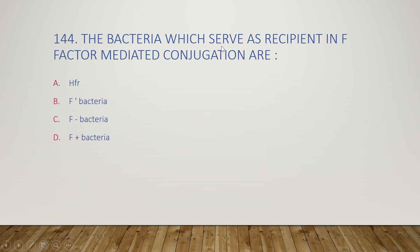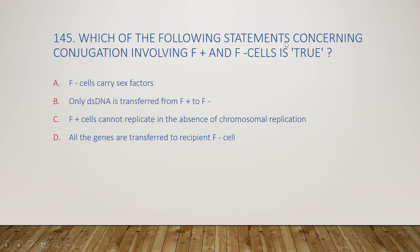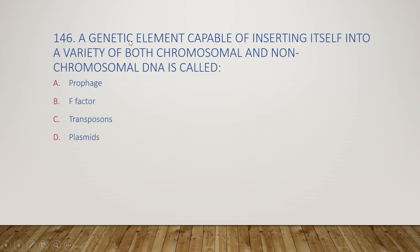The next question: the bacteria which serve as recipient in F factor-mediated conjugation are HFR, F-prime, F-minus, or F-plus bacteria? The right answer is option C, F-minus bacteria. The recipient bacteria is F-minus and the donor bacteria is F-plus. Concerning conjugation involving F-plus and F-minus cells: all the genes are transferred to the recipient F-minus cell — answer is option D.